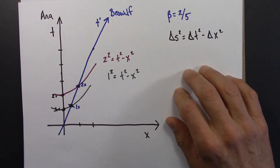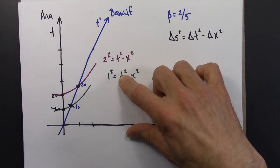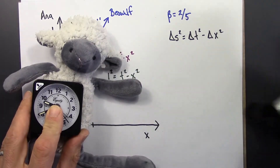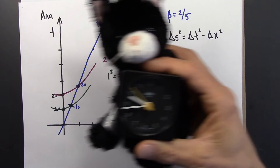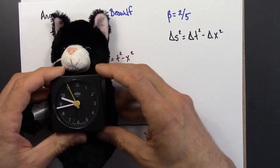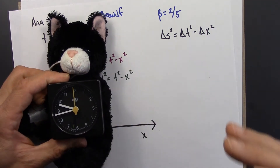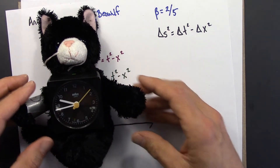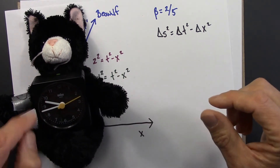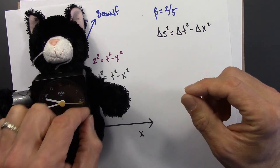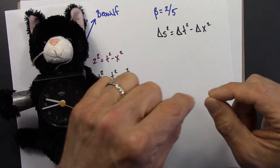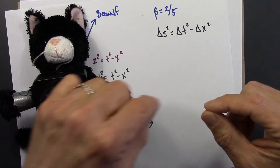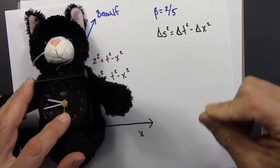We're going to start by jumping into Beowulf's point of view for a moment. We've got Anastasia at rest, and then Beowulf is moving along. We're going to imagine that Beowulf is figuring out the spacetime coordinates of an event using the radar method. There's some event in spacetime, and Beowulf could infer the coordinates for that event by sending out a light flash from where he is. The light flash goes out, bounces back, and a little while later returns to Beowulf, and then he can figure out the spacetime coordinates of this event depending on how long that light flash took.